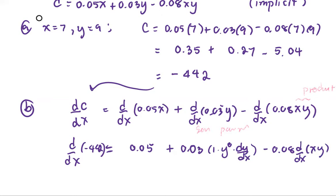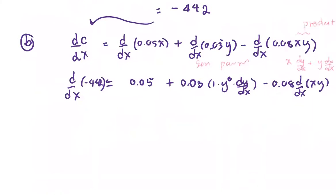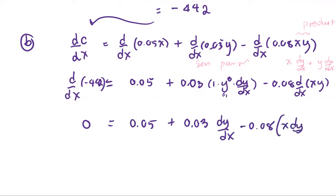When you see the product, we're going to use the product rule. The product rule is the first term multiplied by the derivative of the second, then the opposite way. So we get 0.05 plus 0.03 dy/dx minus 0.08 times X times dy/dx, plus Y times 1 because dx/dx equals 1. Now we have the term dy/dx that we are going to isolate.